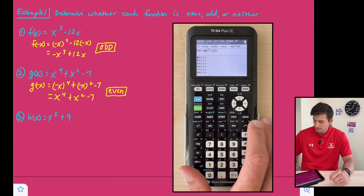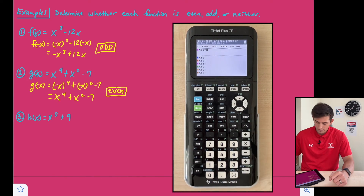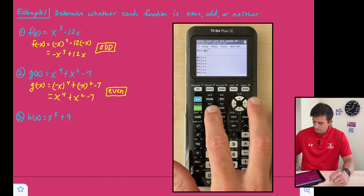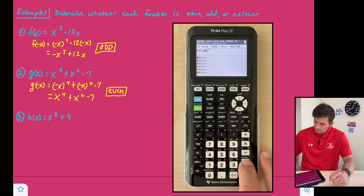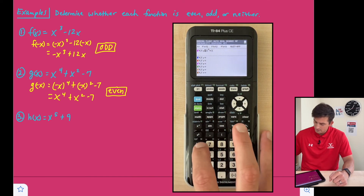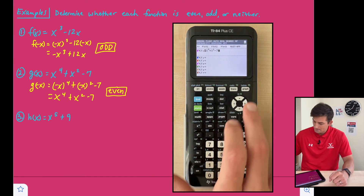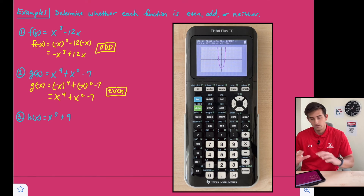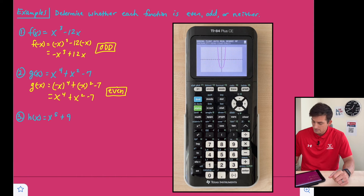Let's go back to y equals, clear out what we had, and graph our second function: x to the fourth plus x squared minus seven. Once we graph this one, it should be symmetric about the y-axis. And we can see that it is — if we folded that over, it would be symmetric about the y-axis.